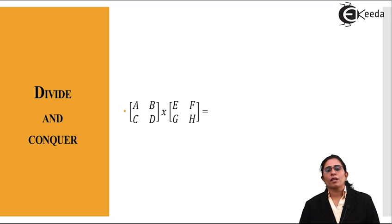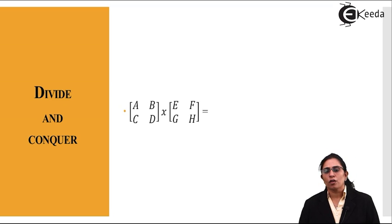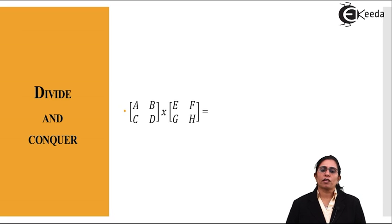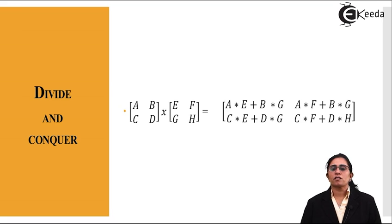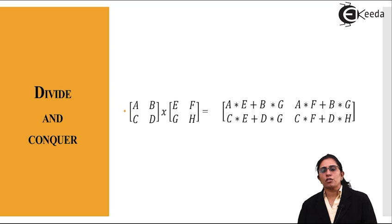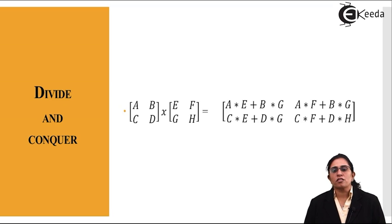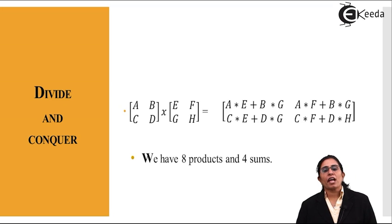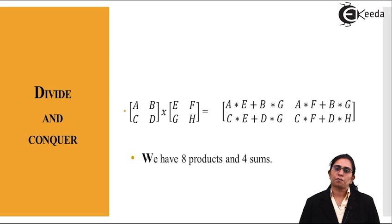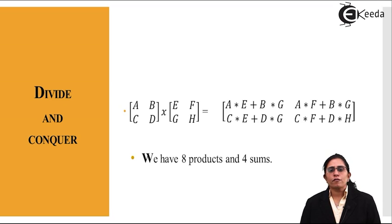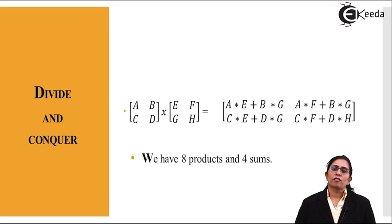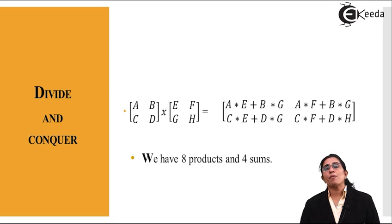Consider a 2x2 matrix with elements a, b, c, d multiplied by e, f, g, h. In regular matrix multiplication we get: ae+bg, af+bh, ce+dg, and cf+dh — eight products and four sums. As the matrix size increases beyond 2x2, you can imagine how many products and sums are needed, making it very tedious to solve larger matrix multiplications.